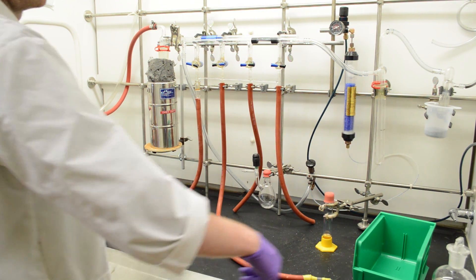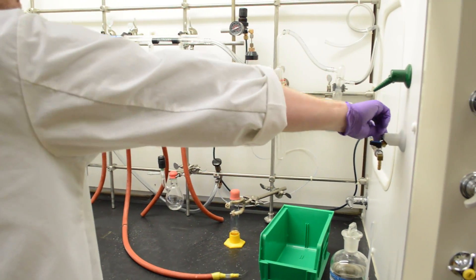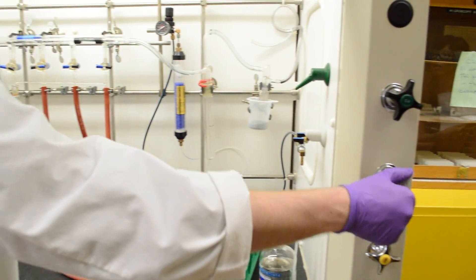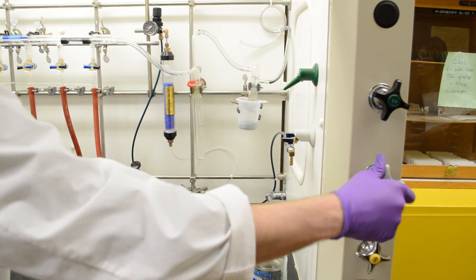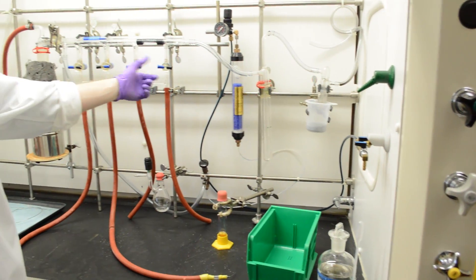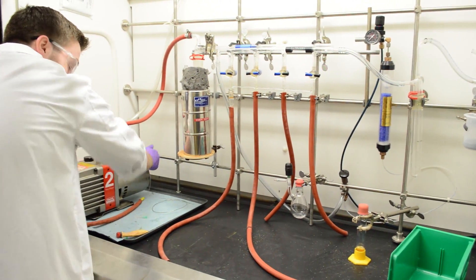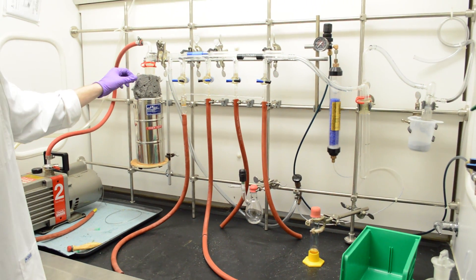So when you're shutting this down, first thing you want to do is make sure you turn off the nitrogen. Make sure all of these are actually closed. You can just turn the pump off. That's as simple as that.